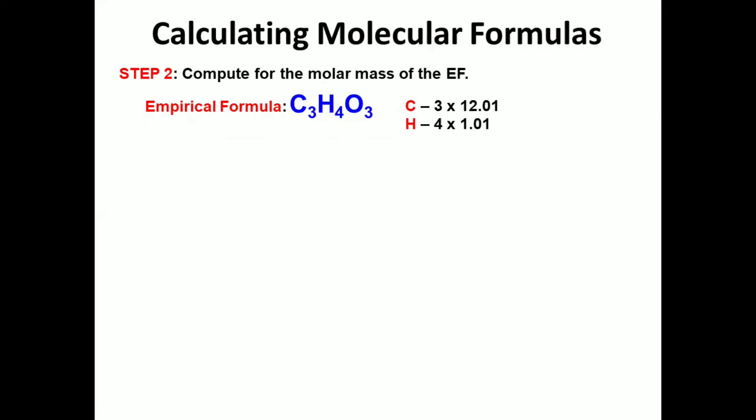So, this is for carbon, hydrogen, and oxygen. And this is their result. And when we sum them up, the result will be 88.07 grams per molar mass. And this will be our molar mass for C3H4O3.